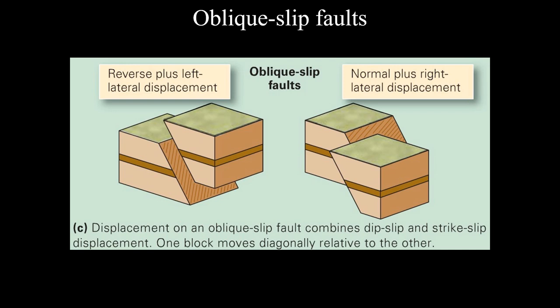We like to put faults into neat categories like dip-slip and strike-slip, but nature is messy. In most real situations you don't have pure strike-slip or pure dip-slip motion — you have a little of both. You may have a reverse fault with a little left-lateral displacement, or a normal fault with a little right-lateral displacement. Most of the time in nature we have oblique-slip faults, which have components of both dip-slip and strike-slip.